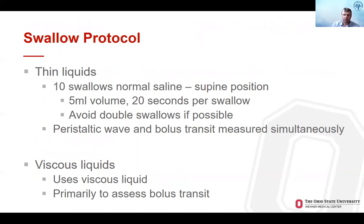For the swallow protocol, we first do supine swallows to negate the effect of gravity. These are small-volume swallows, and we do 10 thin liquid swallows, allowing 20 seconds per swallow for the esophagus to peristalt and to assess bolus transit — both measured simultaneously by the device. It's important that patients know not to engage in rapid swallowing due to catheter irritation; they should swallow the bolus and then wait until 20 seconds have passed. Viscous liquid swallows can follow the thin liquids, primarily to assess bolus transit within the esophagus and how well boluses transfer into the stomach.